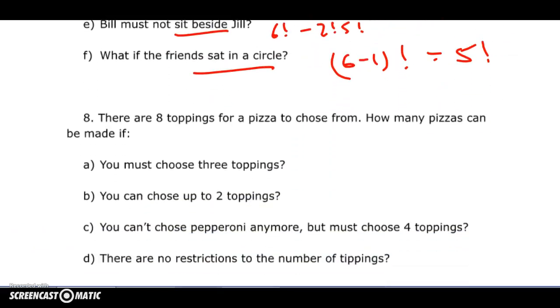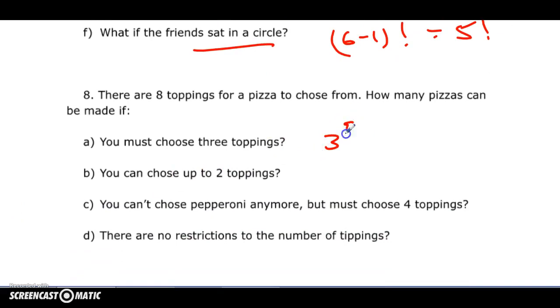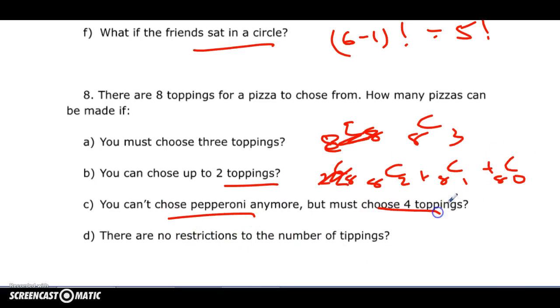Finally, eight toppings for pizza. You're going to choose three, you're going to choose up to two, so if up to two means two—8 choose 3, 8 choose 2, also one, also zero. In pizza the zero is okay. You can't choose pepperoni but must choose four toppings. So this one, if you can't choose pepperoni, down to seven toppings, but you must choose four. Again, these are C questions not P because order doesn't matter.